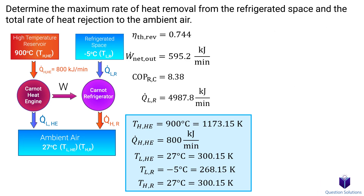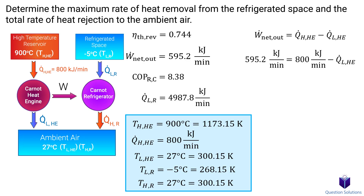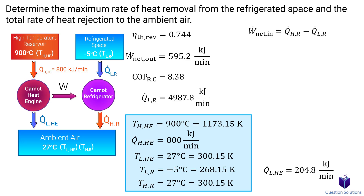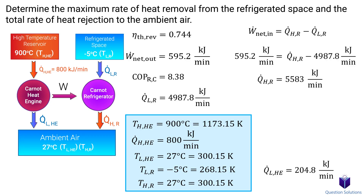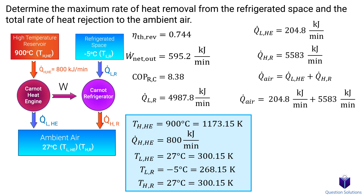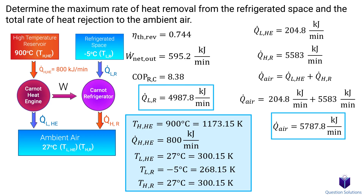The next part of our question is to figure out the total rate of heat rejected into the ambient air. Let's first figure out the amount of heat rejected to the air by the heat engine. We need to remember that for a cyclic device, net work output can be found by subtracting QL from QH. So we can plug our values in and solve for QL. Next, we figure out the heat removed by the refrigerator using the same equation with work input. Remember, the output of our heat engine is the input to the refrigerator. Solving gives us the heat removed by the refrigerator, which is then moved to the ambient air. All we need to do is add the heat rejected by the heat engine and the heat moved by the refrigerator. Adding the two values gives us the total rate of heat rejected to the ambient air.